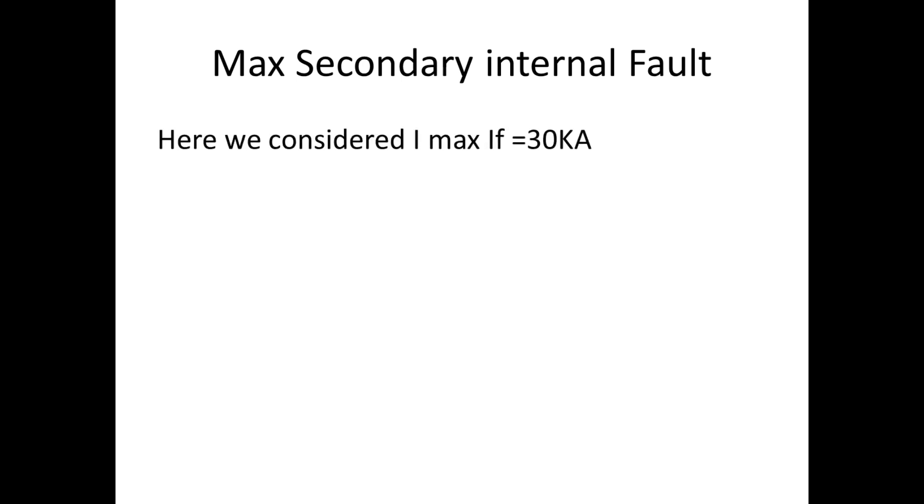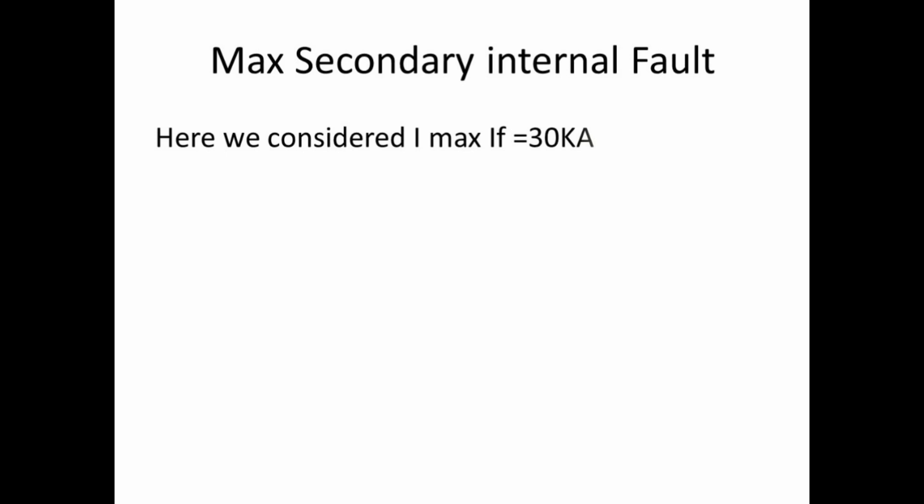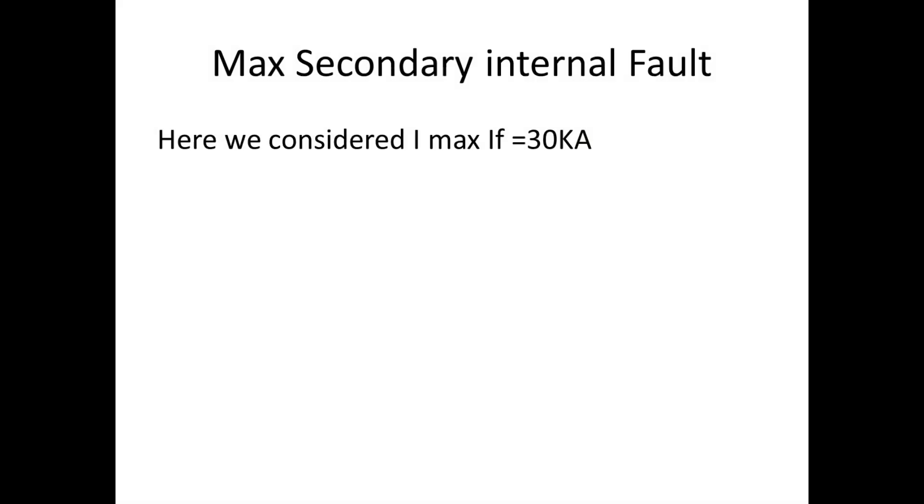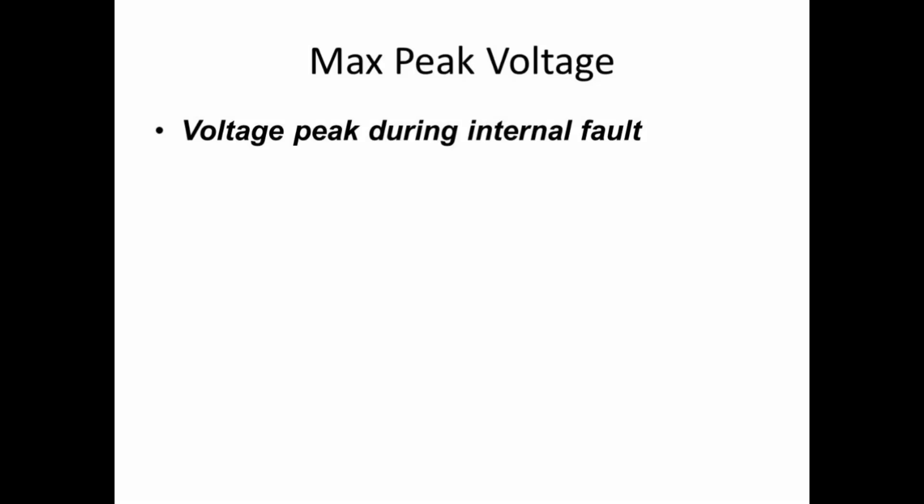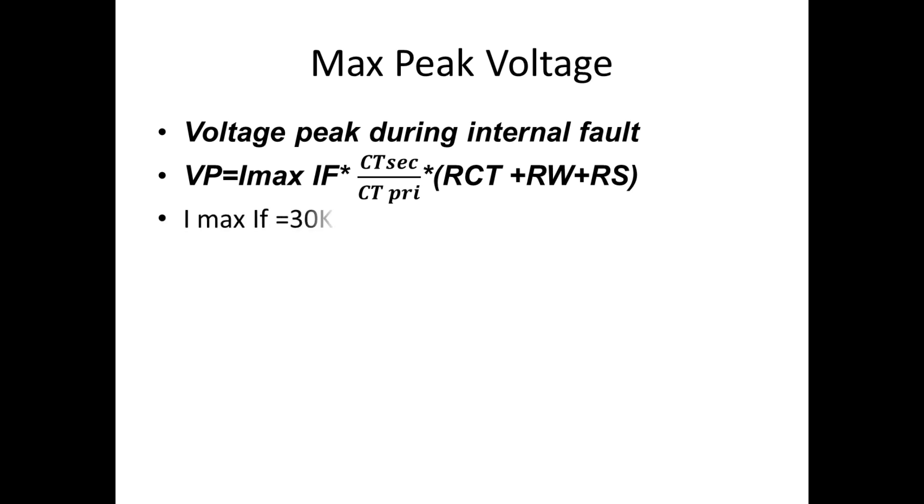Third, maximum secondary internal fault. For this, depending upon the transformer impedance and circuit impedance value, the internal fault current will get. Normally, the internal fault will be much higher than the external fault current. Fourth, the important is maximum peak voltage. This is considered voltage peak during the internal fault. For this, we have the formula VP equal to Imax IF into CT secondary by CT primary into resistor CT plus resistor W plus resistor S. The abbreviation for this, all we know. Imax IF is maximum internal fault condition. We are going to consider is 30 kilo amp.